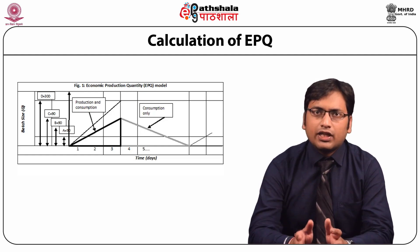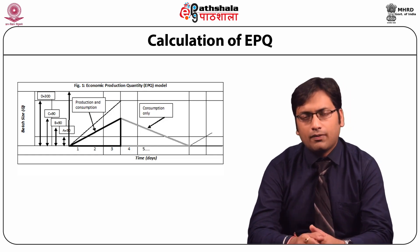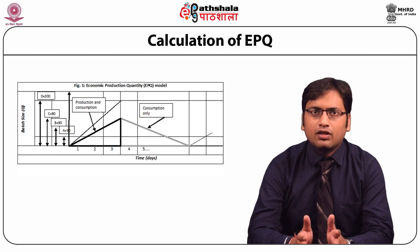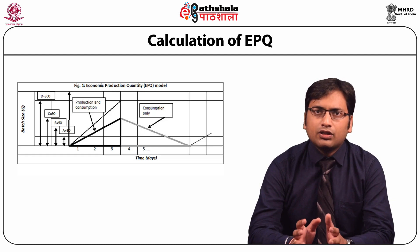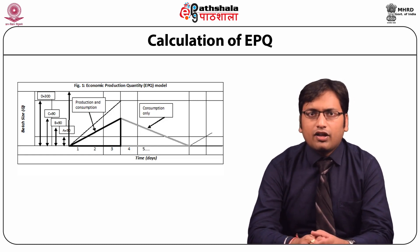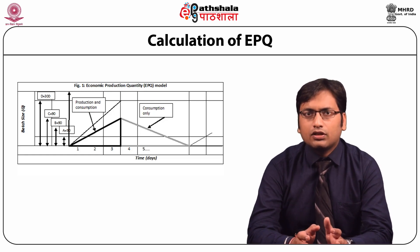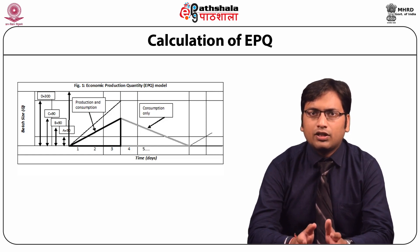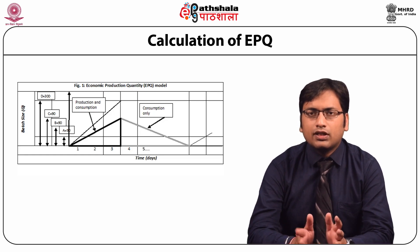It is important to note that maximum inventory level I_max is 270 units, not 300 units. After completion of the production run, the stock of 270 units is used at a constant rate of 10 units daily, shown by a downward-moving line. This shaded area indicates only consumption with no production. If there had been no daily consumption and only production of 100 units, stock buildup would be 300 units, as shown by the dotted line. When this stock is fully consumed, the cycle repeats.